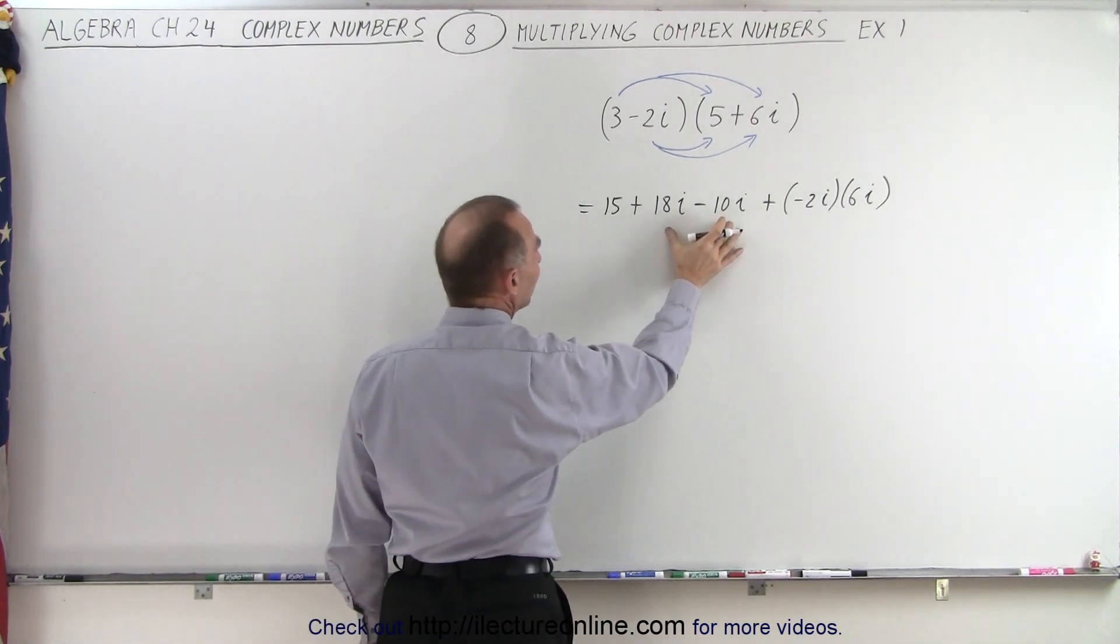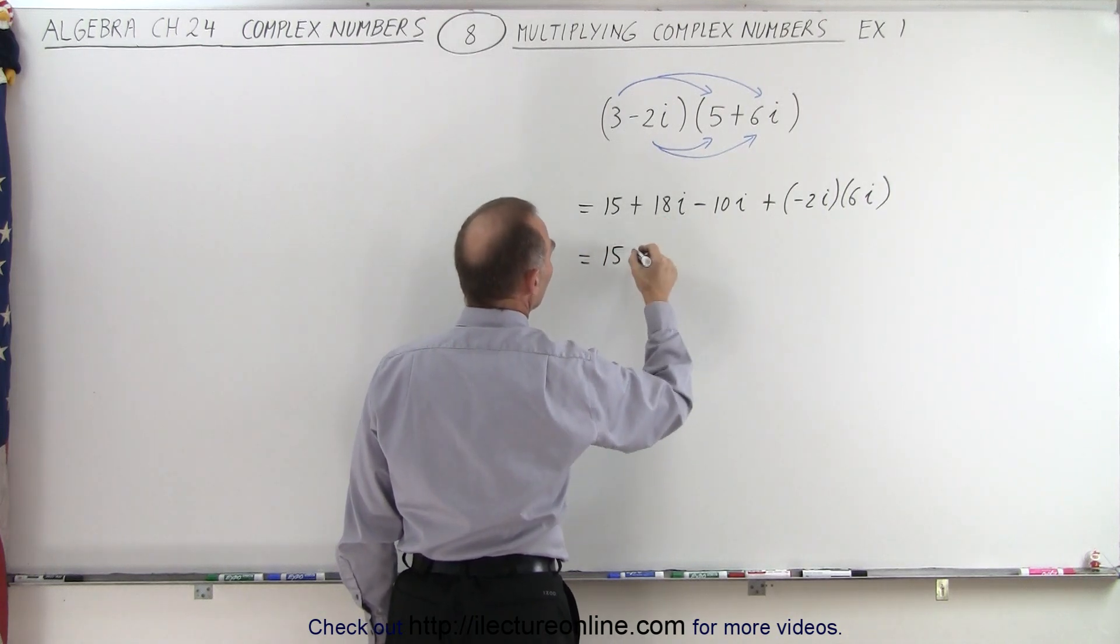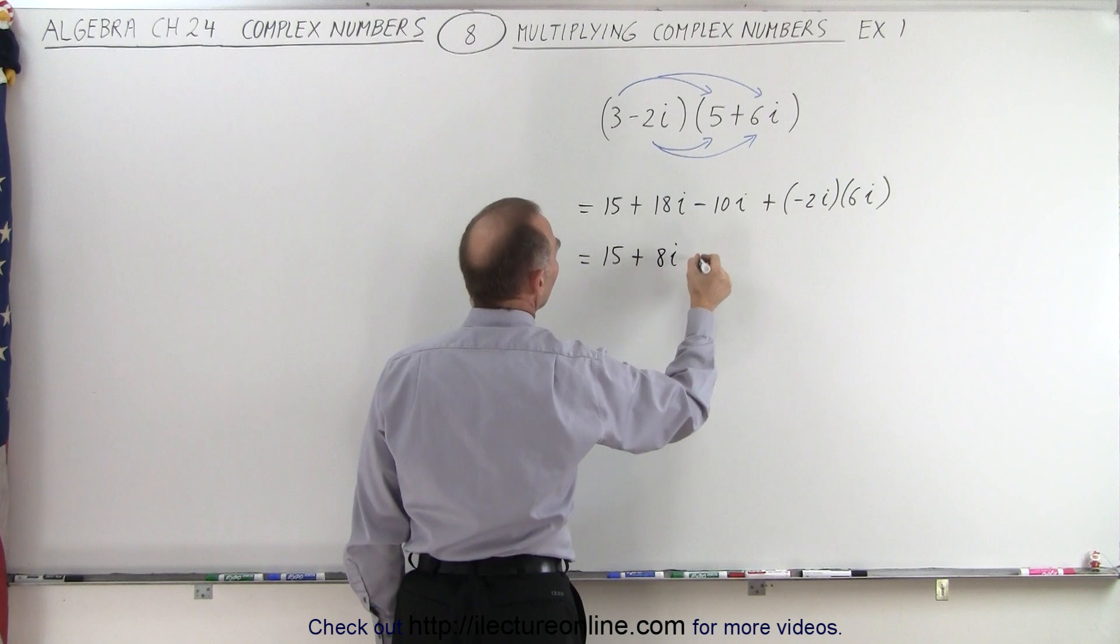So here we can see that we can simplify these two terms, so this becomes equal to 15. 18 minus 10 is plus 8i, plus,